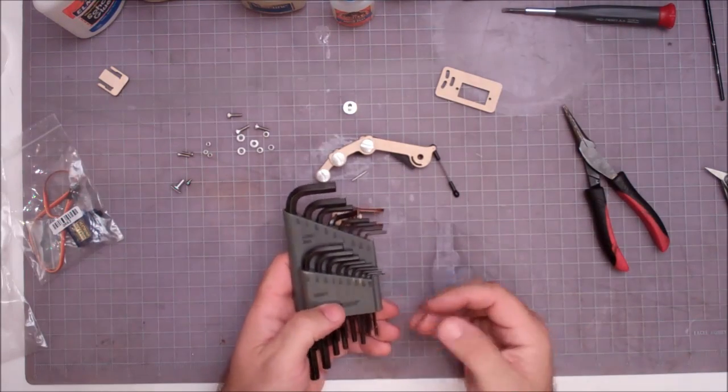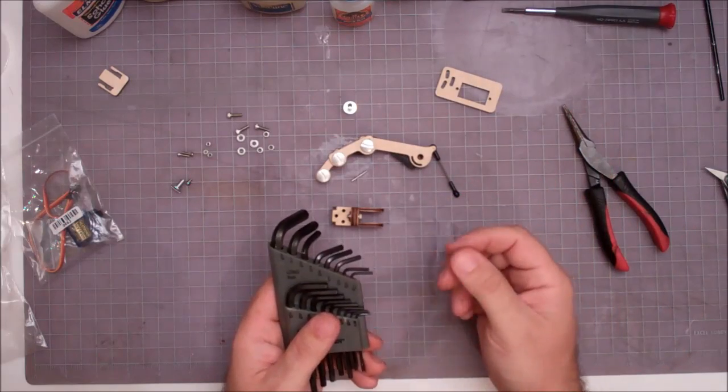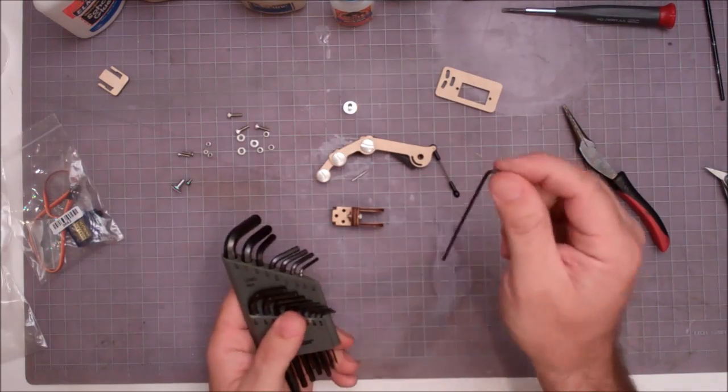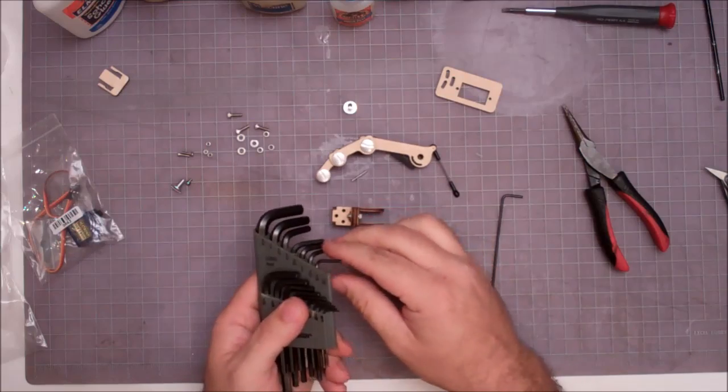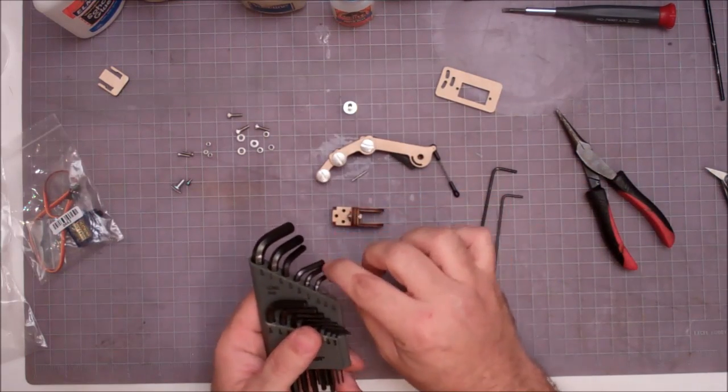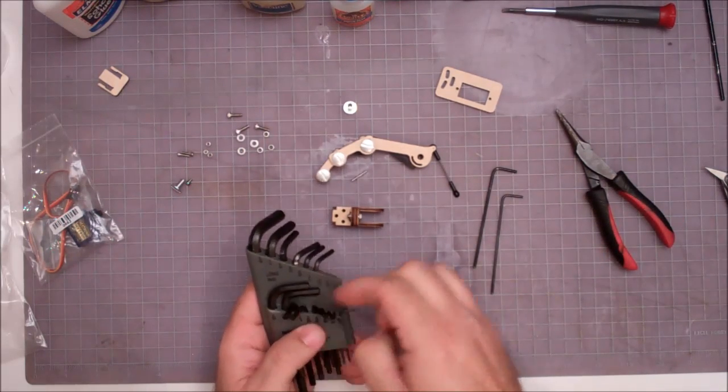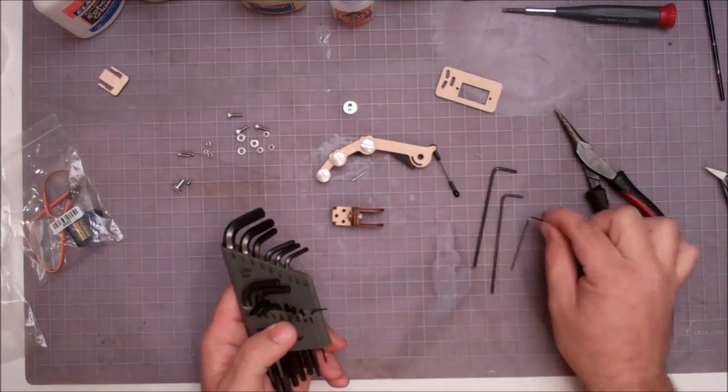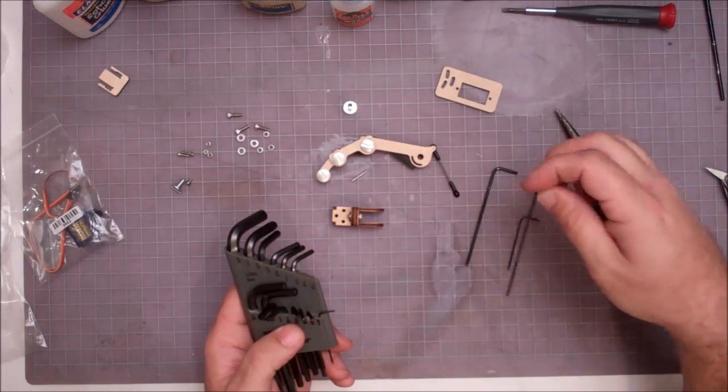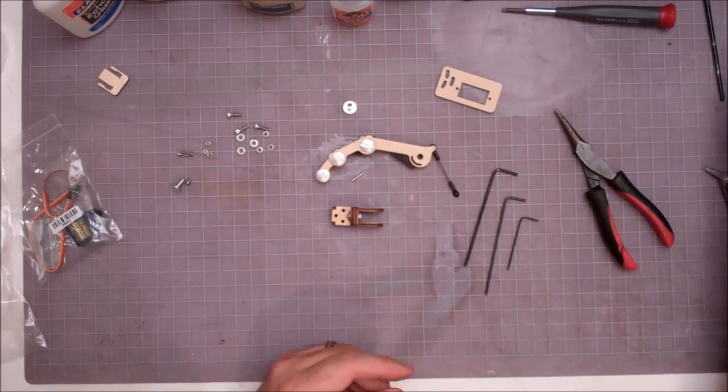Here's where our Allen wrenches come in. You actually need three of the wrenches to do this set: a 1/16 inch wrench, a 5/64, and a 3/32. Those are the only ones we'll need—we'll set the rest aside.